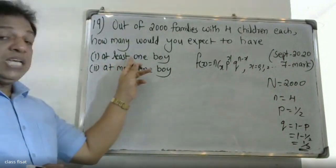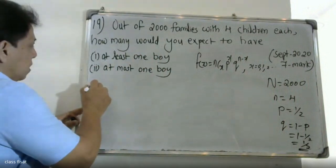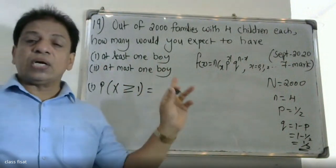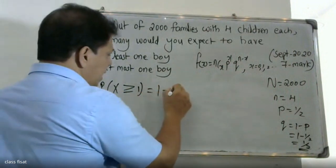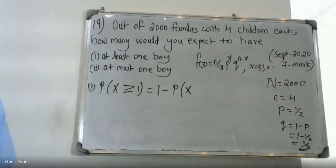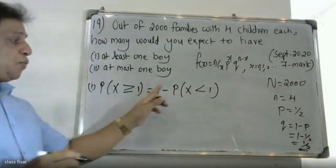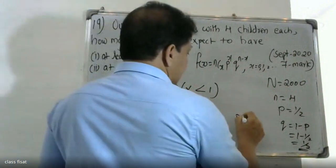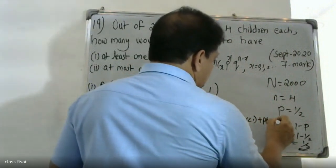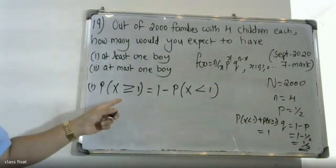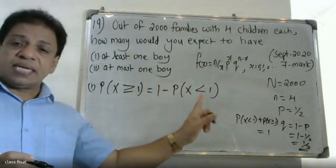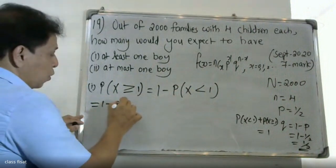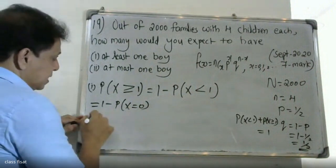First question: at least one boy. We are looking at the probability of X greater than or equal to 1. This equals 1 minus the probability of X less than 1, which is 1 minus the probability of X equal to 0.